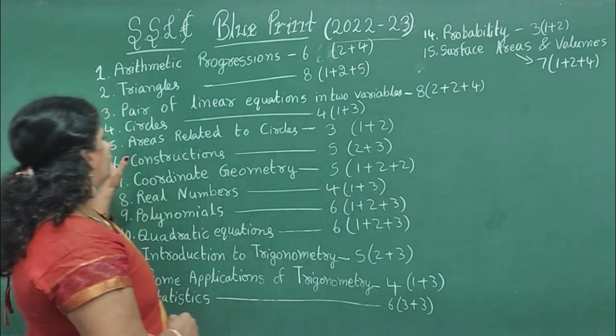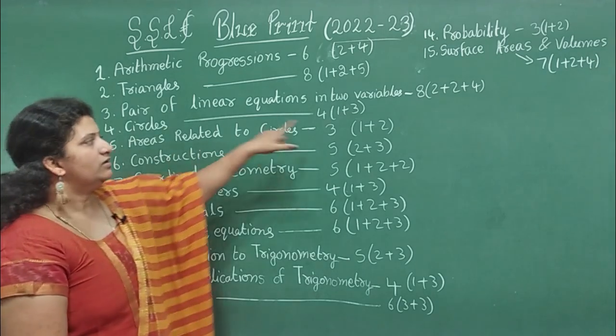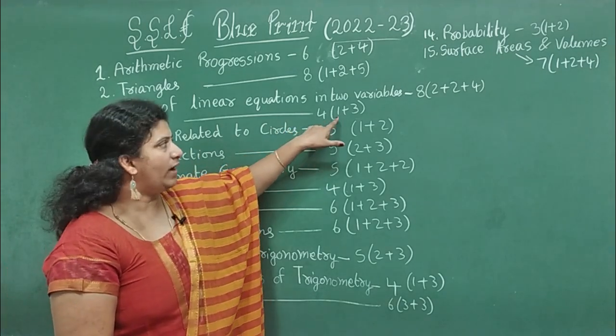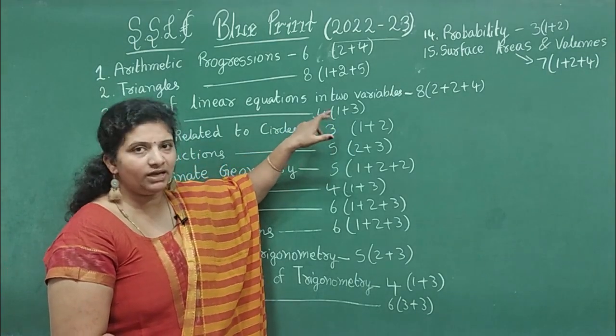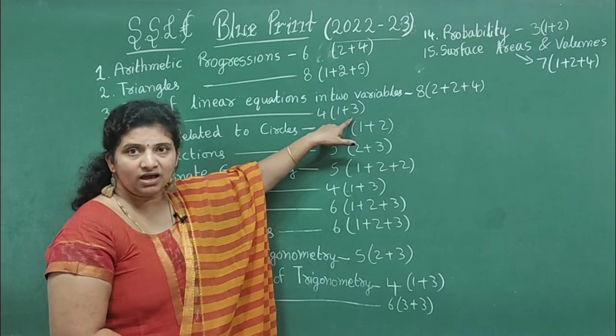Fourth chapter, Circles - 4 marks weightage. One mark may be a bit or a one-word answer question. Three marks - there are two theorems, one theorem is fixed from this chapter.